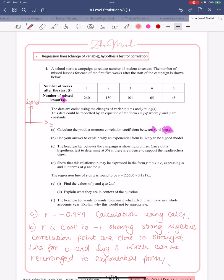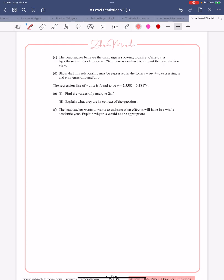You're then told that the head teacher believes that the campaign is showing promise. Carry out a hypothesis test to determine at five percent if there is evidence to support it. Hypothesis testing on regression is one of the easiest topics. You're getting a regression line, you're getting a hypothesis test, you see that immediately. You're going to know that your H naught is rho equals zero, it's a rho but it looks like a p. And H one, you've got to think what does that mean. Well she is saying it's showing promise, so she's expecting it to have an effect, to stay negative, so less than zero.